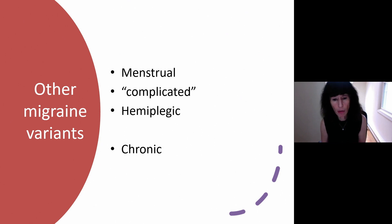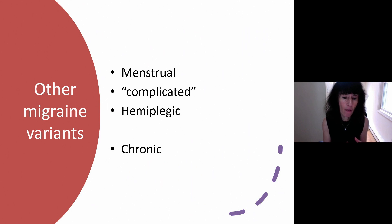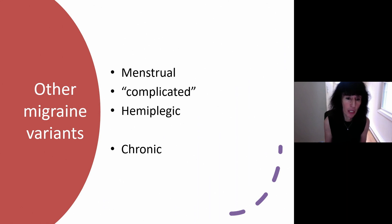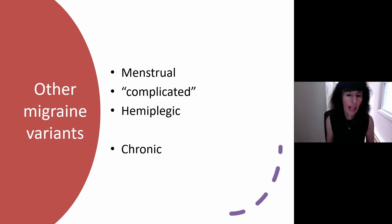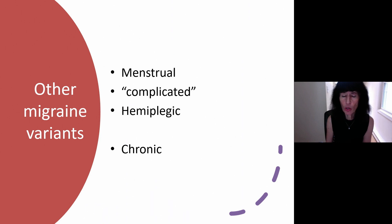Chronic migraine, by definition, lasts at least 15 days out of the month, with a minimum of eight of those days being migraine. The other seven can be more of a headache without the exact same phenotype. This can be very disabling. Once people chronify — yes, that really is a word — it can be very hard to flip it back to episodic migraines once again. The way you make this diagnosis is to have patients keep a calendar or a diary.